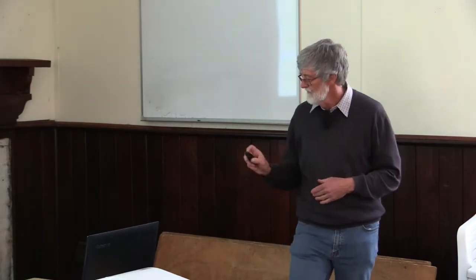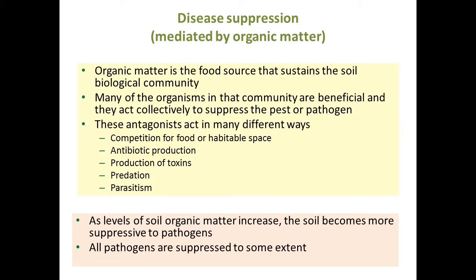One type of disease suppression is what we call organic matter-mediated disease suppression. This is where we get a whole range of different organisms that are all dependent on the bacteria and fungi feeding on organic matter - they collectively help to keep disease under control. They can act in many different ways: competing with the pathogen for food or space, producing antibiotics, some organisms produce toxins, there's predation - something eating something else - or parasites. In general, as you increase the level of soil organic matter you tend to get a soil that's more suppressive to pathogens.